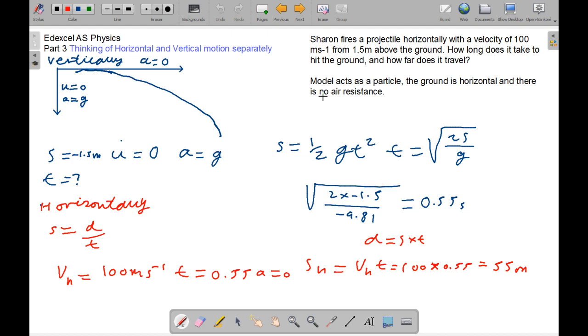So, we're taking u to be 0, and a equaling to g, which is 9.81, just like in previous examples that I've just shown you. And, s equals minus 1.5 meters, u equals 0, and a equals g.